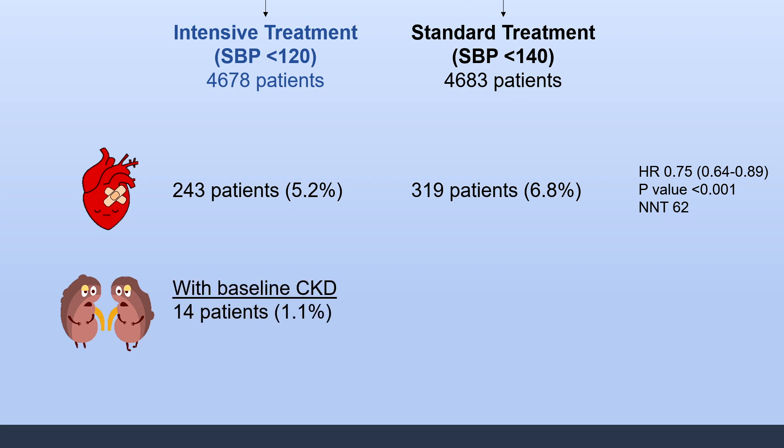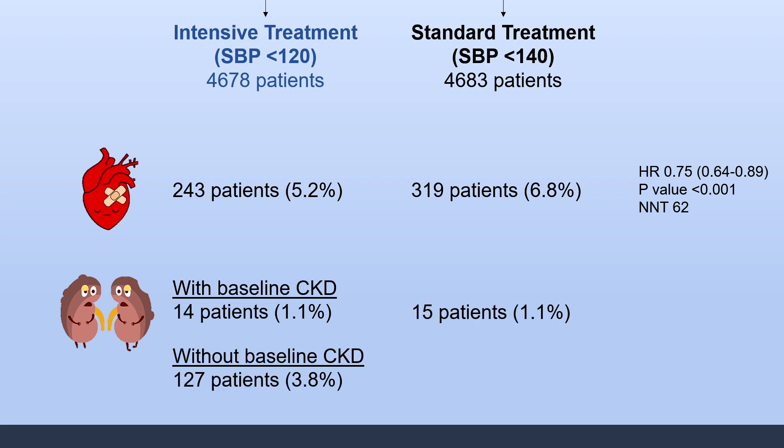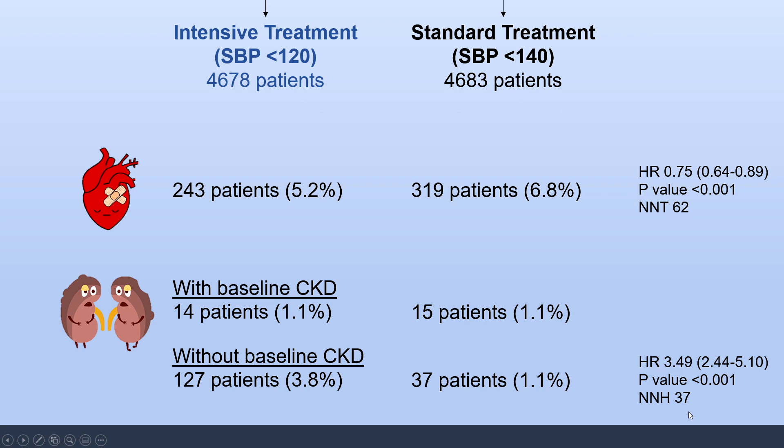They also examined renal outcomes, looking separately at patients with and without baseline CKD. In patients with baseline CKD, there was no difference between groups for a 50% reduction in GFR. However, in patients without baseline CKD, significantly more patients in the intensive treatment group experienced a greater than 30% decline in GFR — a hazard ratio of 3.49 with a very significant p-value and a number needed to harm of 37.